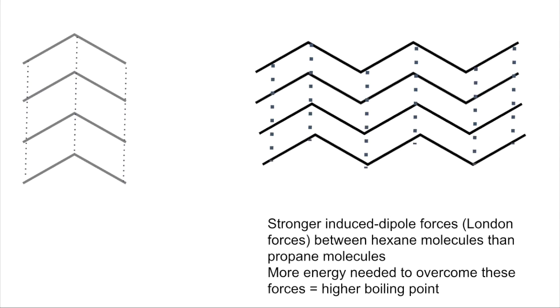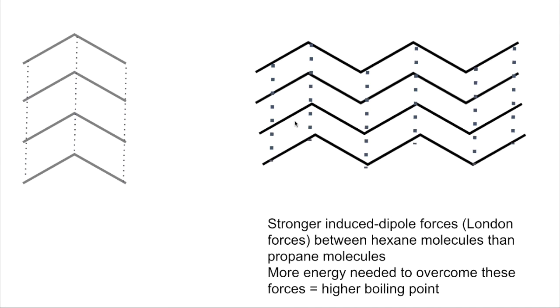Obviously with an even longer chain — say with eight or ten carbons — the boiling point just keeps going up and up.